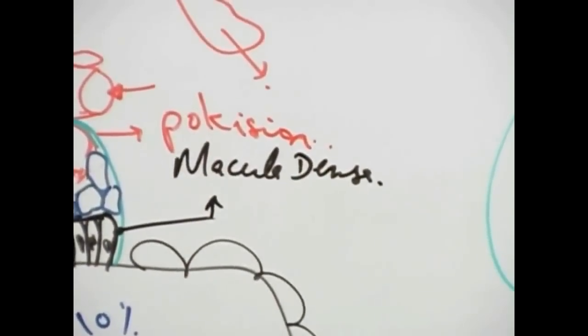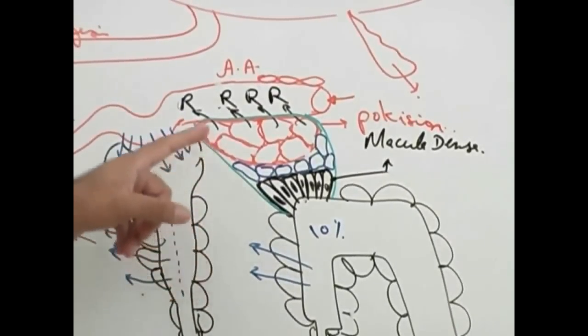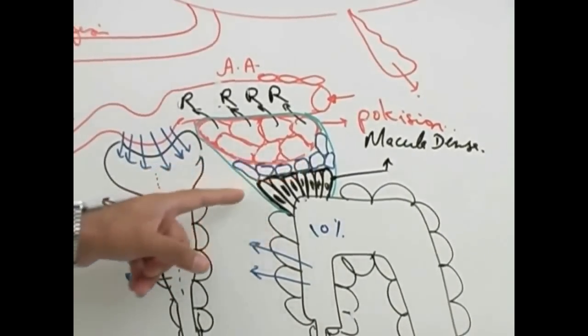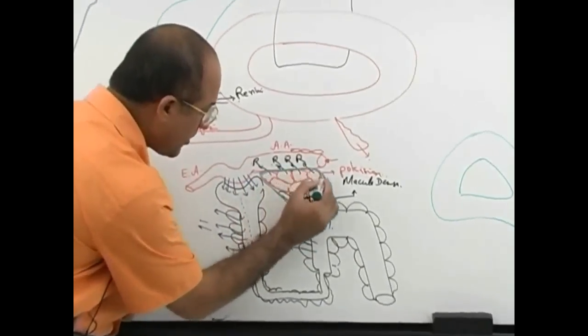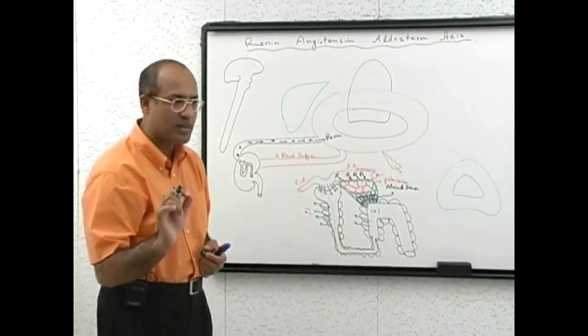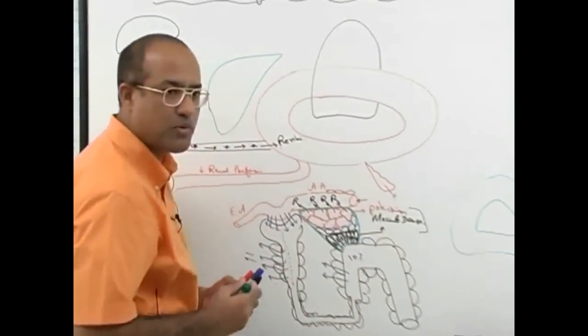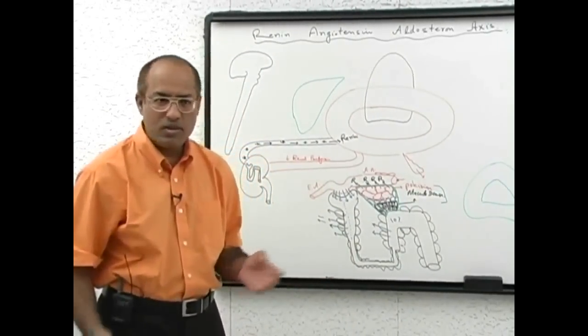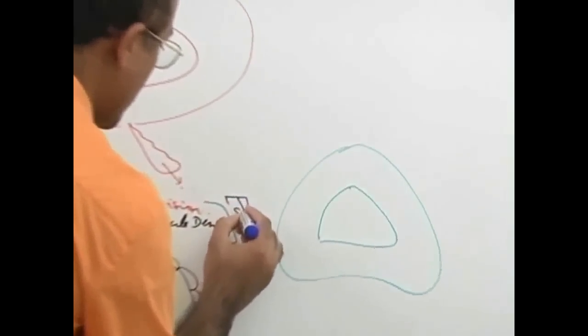Polkacin is from afferent arteriole, macula densa is from distal convoluted tubule. This is vascular component, this is nephron component. This is pressure measuring device, this is sodium measuring device. And they are held together through connective tissue cells. All this apparatus as a group is present in every nephron. It means every nephron has blood pressure measuring device as well as sodium measuring system. And as a group, polkacin plus macula densa, they have given a very special name to this. What is the name of this apparatus? Juxtaglomerular apparatus.